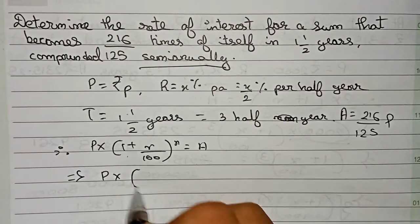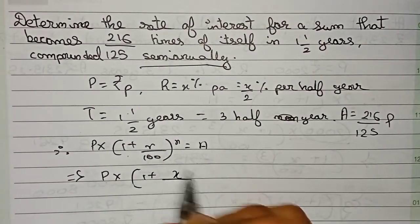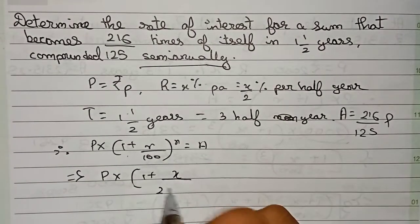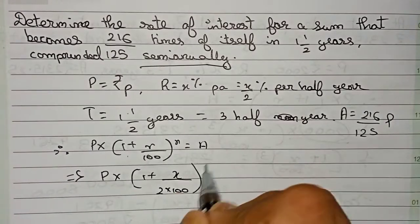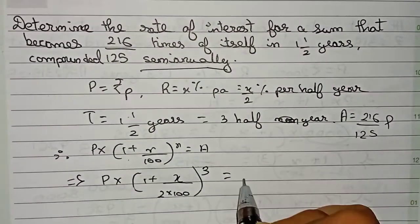Rate is our x by 2, so x by 2 means 2 into 100 to the power n, that is to the power 3, is equal to the amount, that is 216 by 125 P.